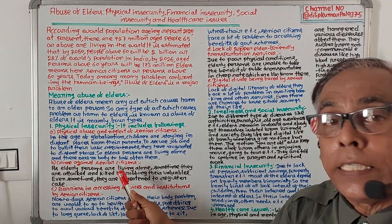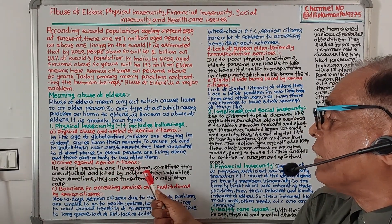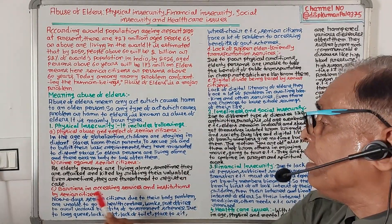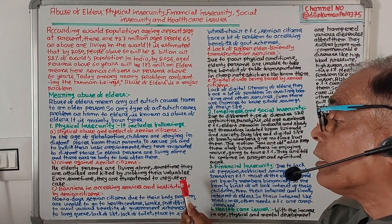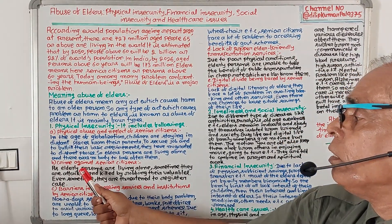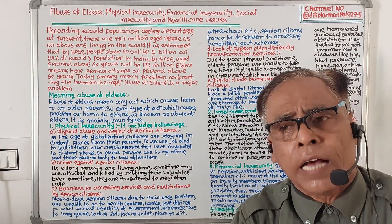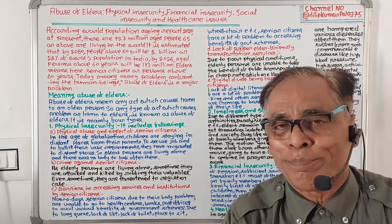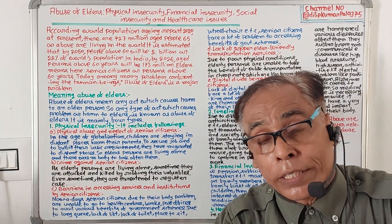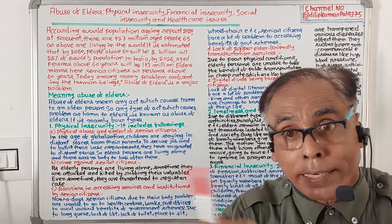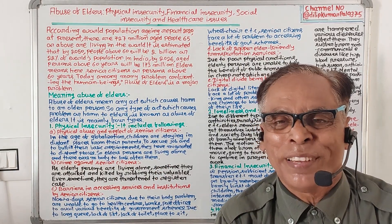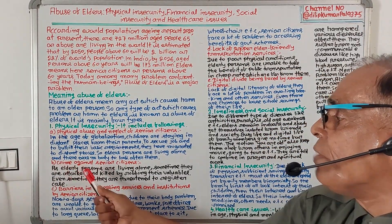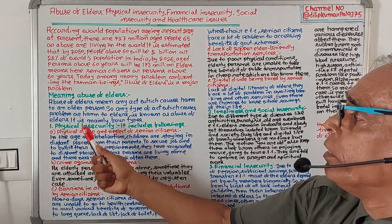Number two under physical insecurity is crime against senior citizens. As senior citizens are staying alone, sometimes they are attacked and killed by robbers taking their valuables. They are even threatened to prevent them from registering cases at the police station. This crime against senior citizens is also a type of physical insecurity.